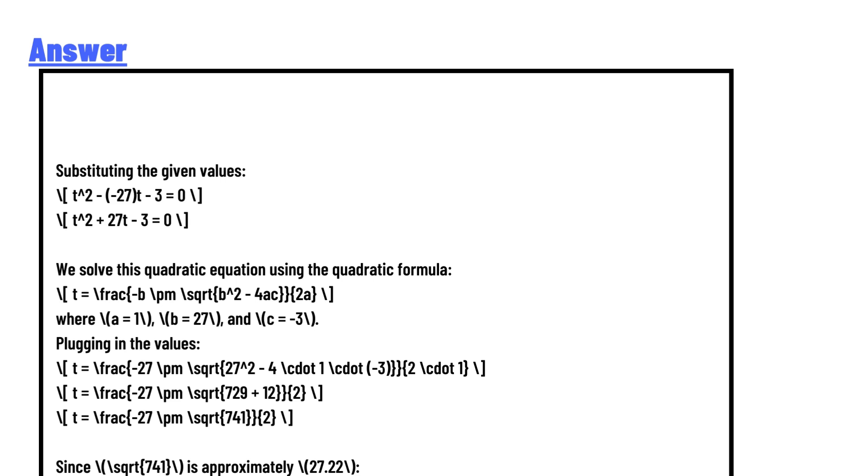The quadratic equation in terms of x can be written as x squared minus (sum of roots) times x plus (product of roots) equals 0. Substituting the given values: x squared minus negative 27x plus negative 3 equals 0, or x squared plus 27x minus 3 equals 0. We solve this quadratic equation using the quadratic formula.